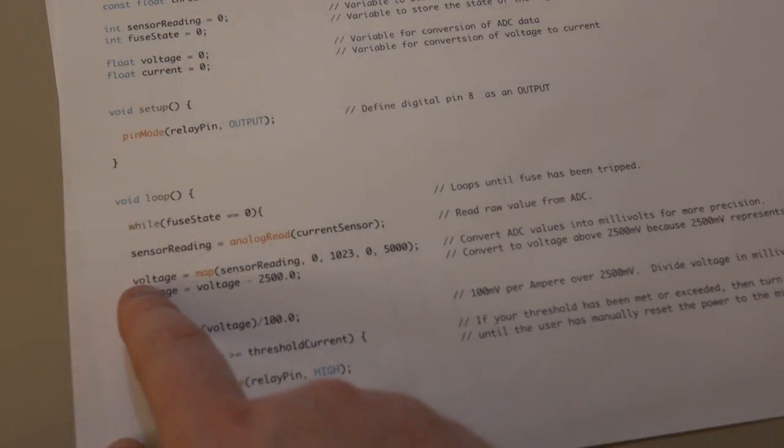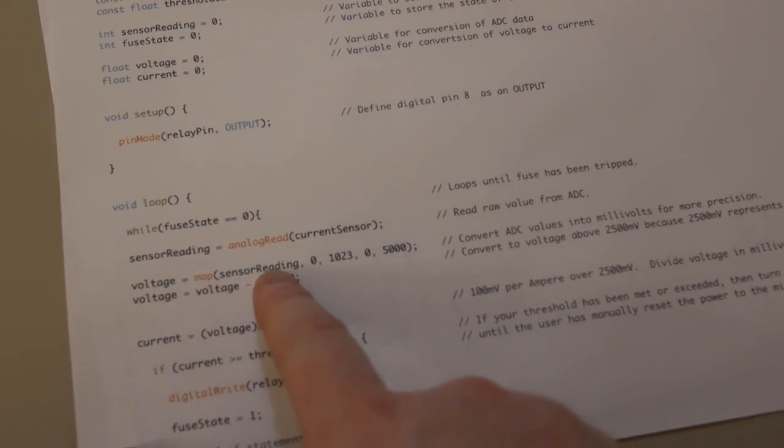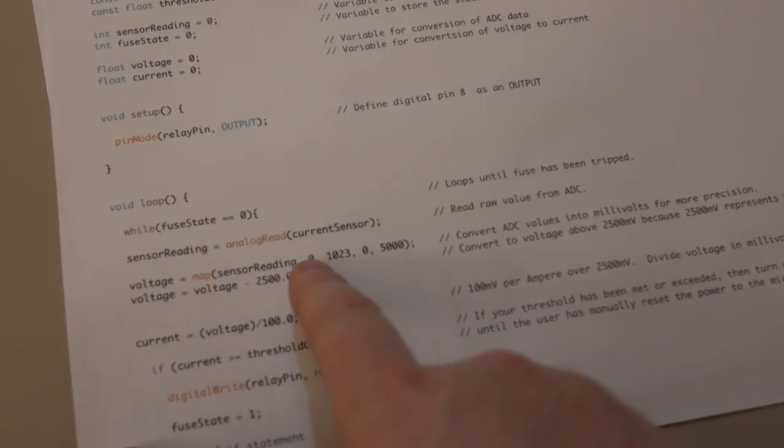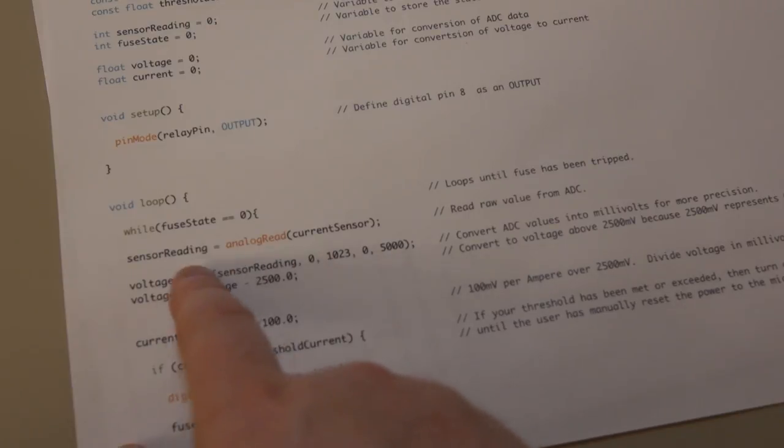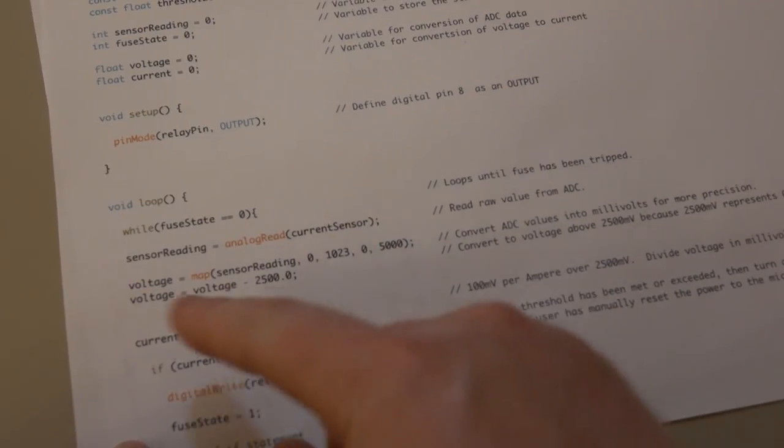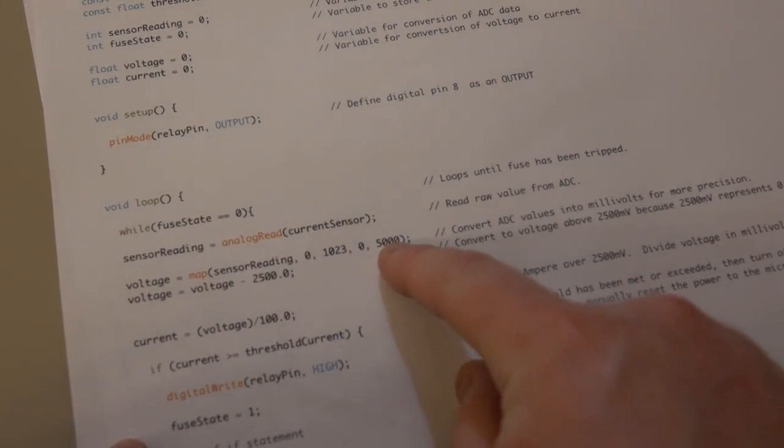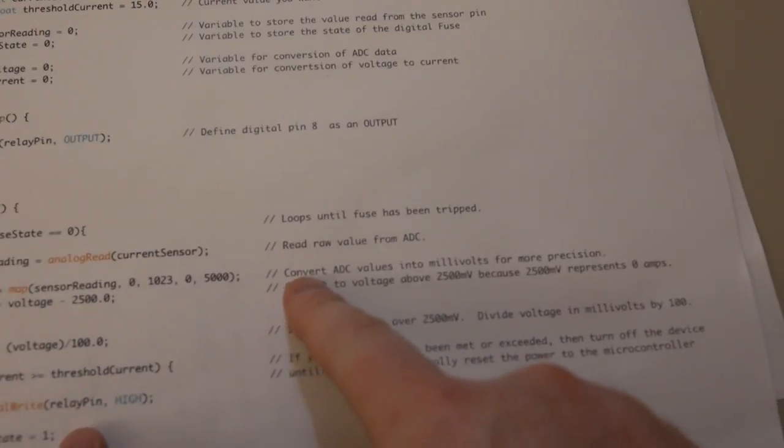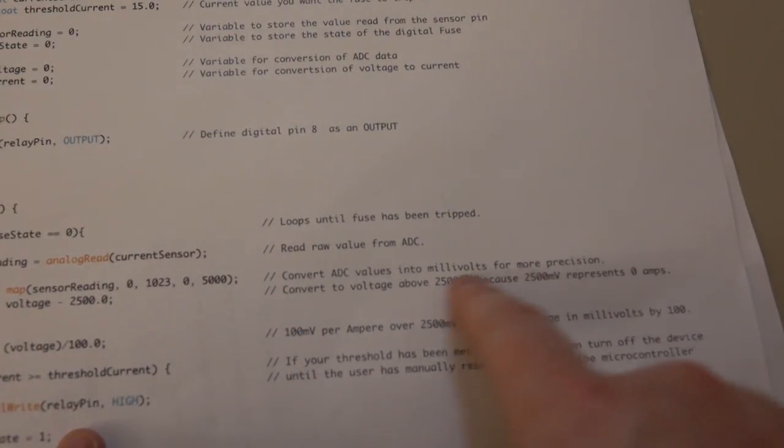The next thing we're going to do is take the voltage, and we're going to map that sensor reading value. Basically, we're going to convert the raw values to 0 to 5000 millivolts. And I'll show you why in a second, why I chose 5000 instead of 0 to 5. So we're going to convert the analog to digital converter values.